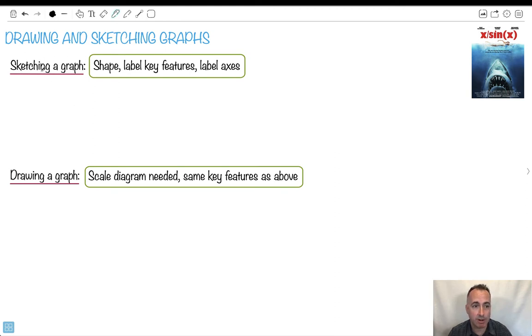So sketching a graph is much less detailed than drawing a graph. In sketching a graph, you just need to do a quick sketch. Let me show you how I would sketch a graph. I might go like bang, bang, X, Y. Don't forget to label your axes.